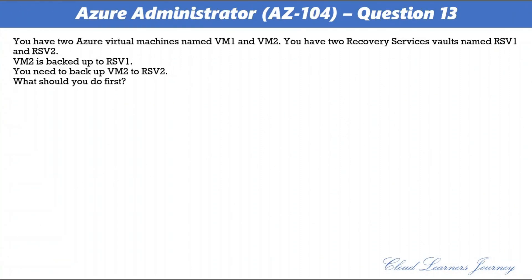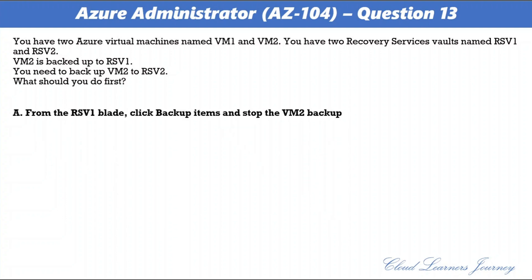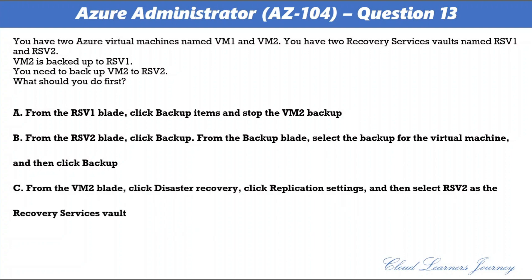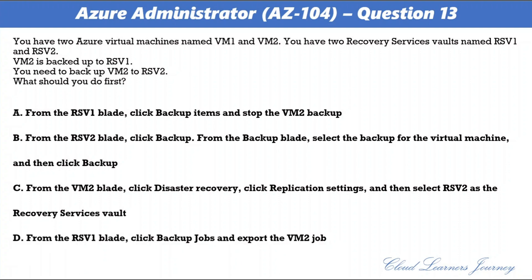Question 13. You have two Azure virtual machines VM1 and VM2, and two Recovery Services Vaults RSV1 and RSV2. VM2 is backed up to RSV1. You need to back up VM2 to RSV2. What should you do first? Options: A. From RSV1, click Backup Items and stop the VM2 backup. B. From RSV2, click Backup and configure. C. From VM2, configure disaster recovery to RSV2. D. From RSV1, click Backup Jobs and export. The correct option is A. VMs can only be backed up to a single Recovery Services Vault, so you must stop the VM2 backup from RSV1 first before you can add it to RSV2.